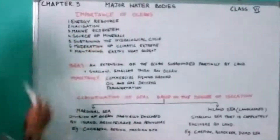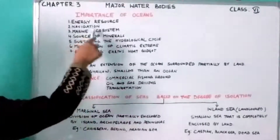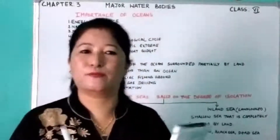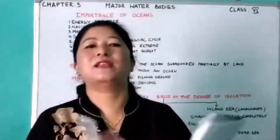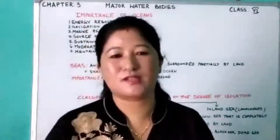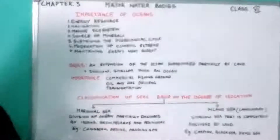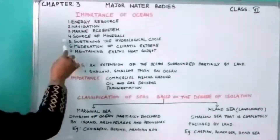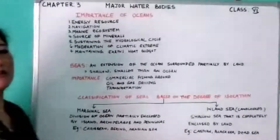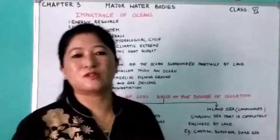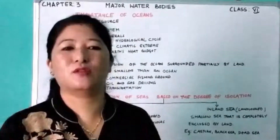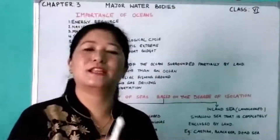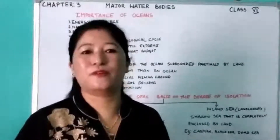Number three: marine ecosystem. 'Marine' means sea. Oceans are rich in seafood — they provide us with fish, shrimp, and many other sea products, so they are the storehouse of marine life and a source of marine food. Number four: source of minerals and mineral oil. Oceans are rich in minerals and mineral oil like petroleum and natural gas, which are an important source of energy for us.